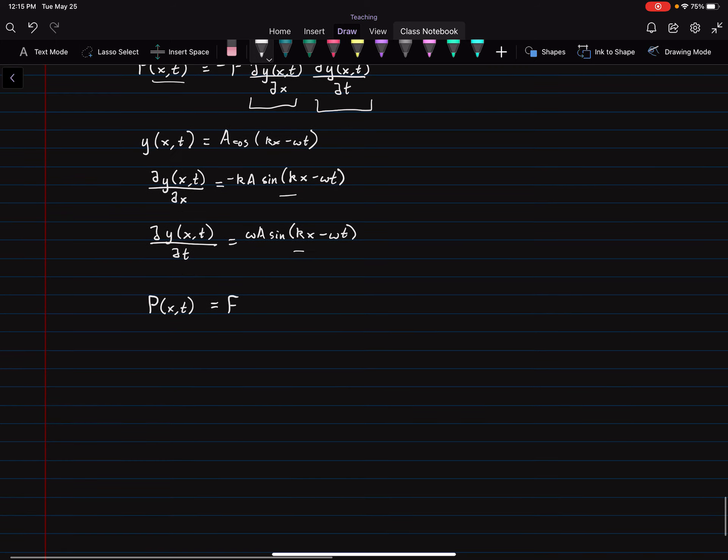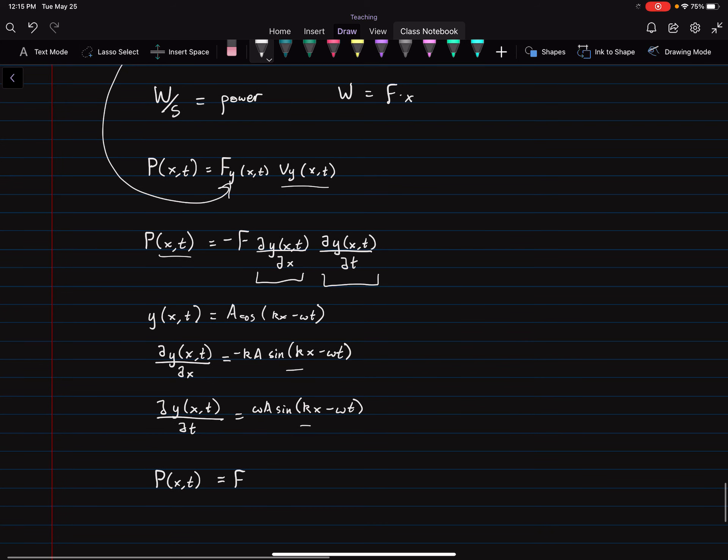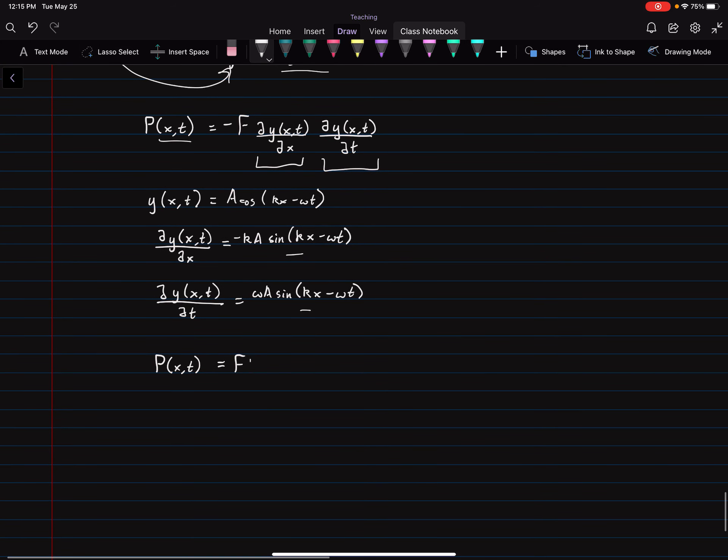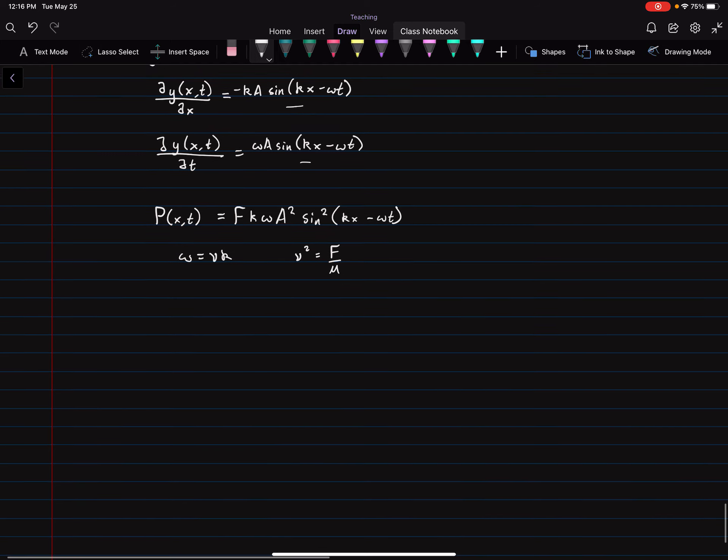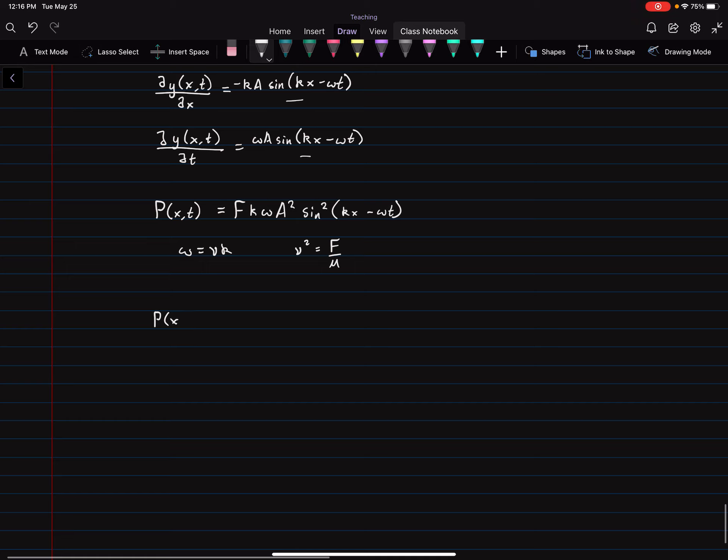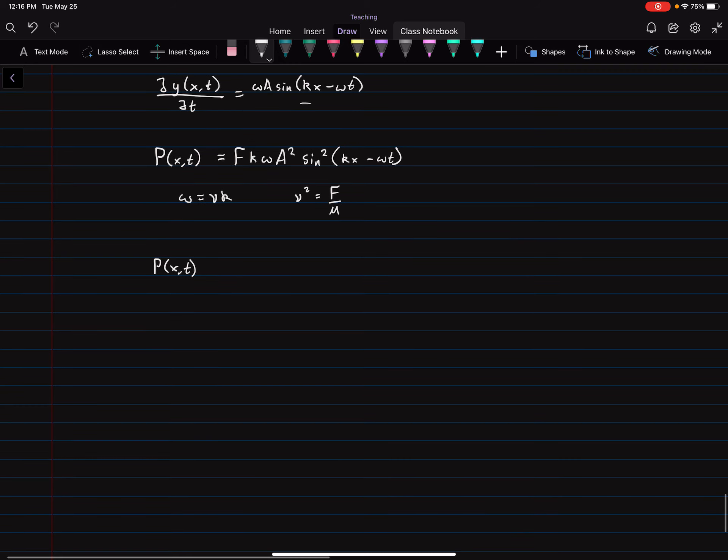So we have, then, that the power as a function of X and T is equal to F times each of these multiplied by each other. So, and with this negative sign cancelling out with the other negative sign. So, K omega A squared sine squared KX minus omega T. And if we use omega equals nu K, and what we derived before, that nu squared equals force over mass per unit length, then we can get power in terms of some fundamental quantities of the motion and the properties, the physical properties of the string.